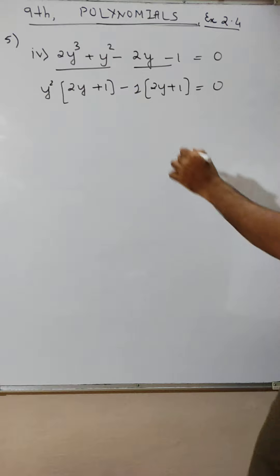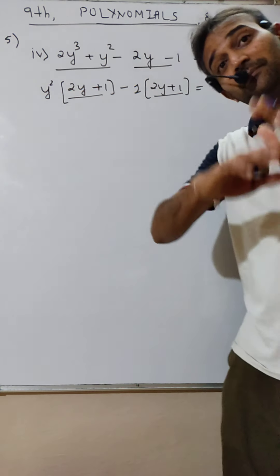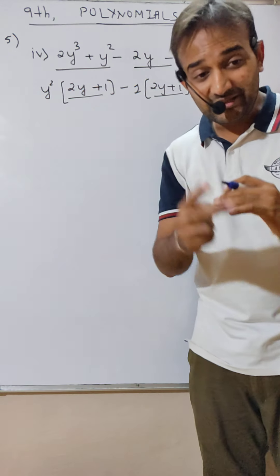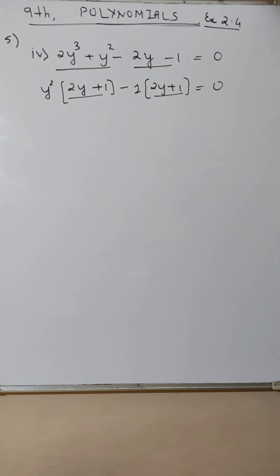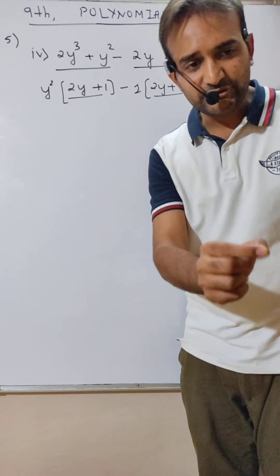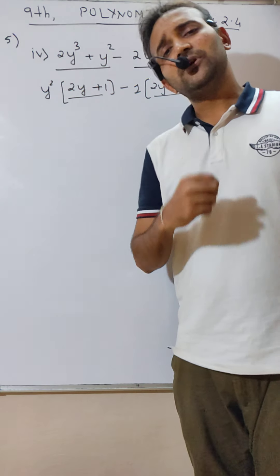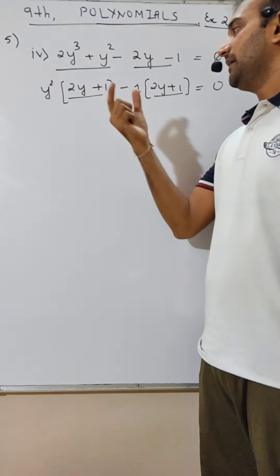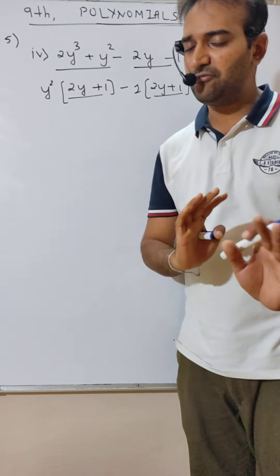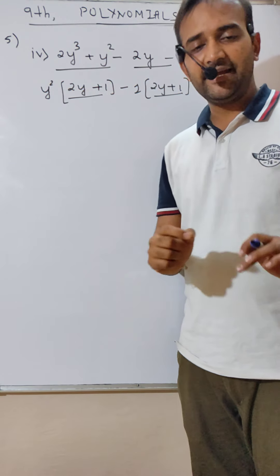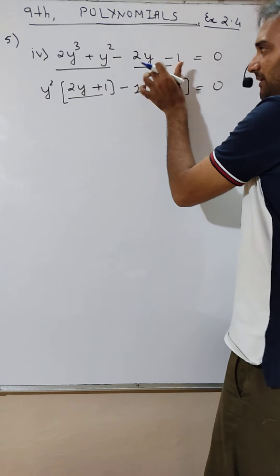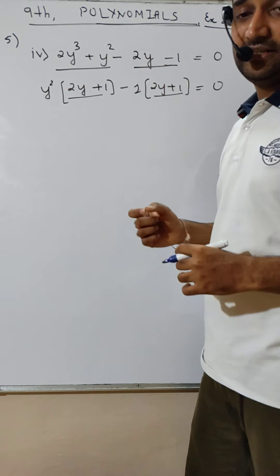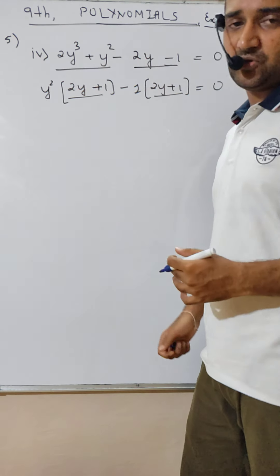Correct! Same common aaya — same common factor appeared in both groups. So we use the first sum (grouping) method. The rule is: in the process of making the two groups, the common factor should be the same. If the common is not the same, we shall not proceed by this method.